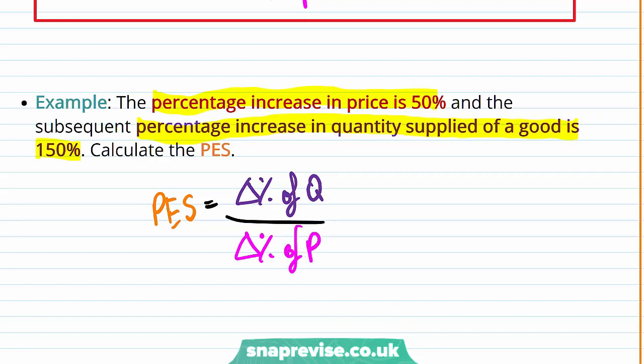So what are those numbers going to be? Well, we have percentage increase in quantity supplied of the good, which is 150%. That's a positive number. That's divided by 50%, which is the percentage increase in price. Again, that is also a positive number. And therefore, our PES is going to be 3.